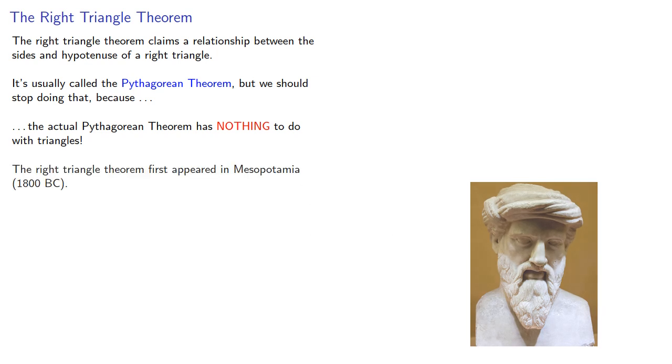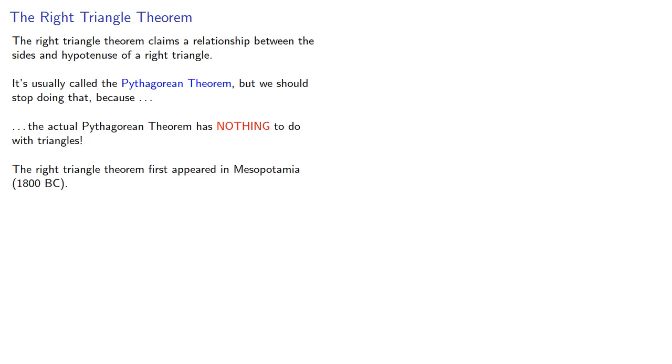The right triangle theorem first appeared in Mesopotamia around 1800 BC, and it was explicitly stated by ancient Indian geometers by about 800 BC.